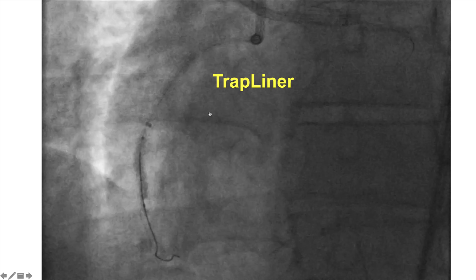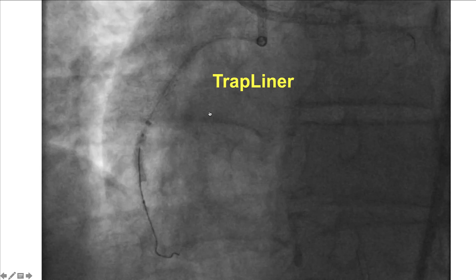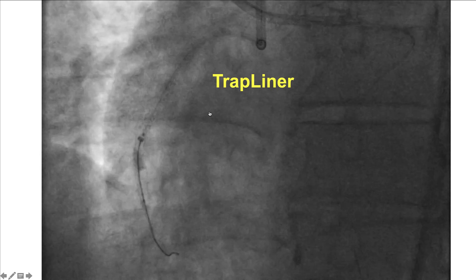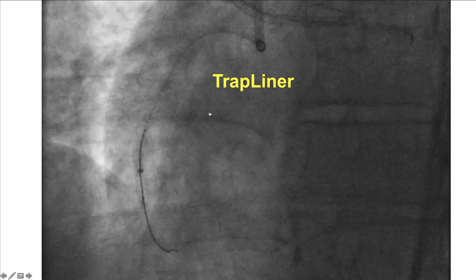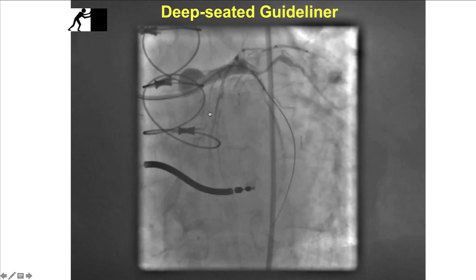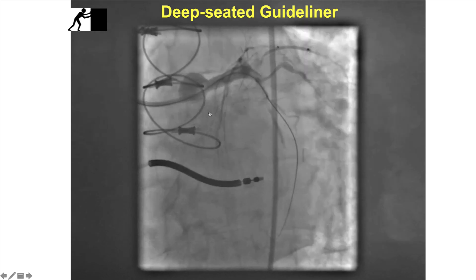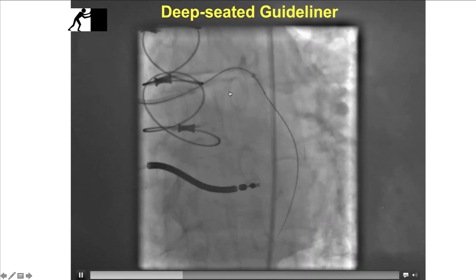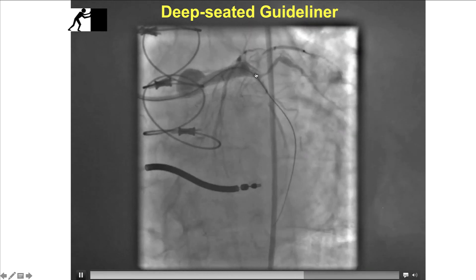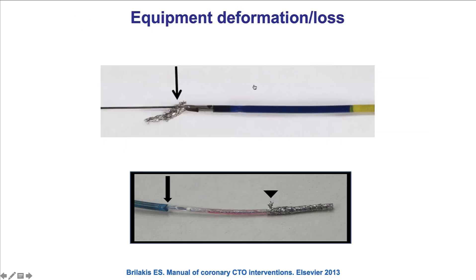Guide extensions are very powerful and can truly improve support, but they can also cause complications such as dissections. That is why injections should not happen if there is a dampened pressure waveform, and they can also lead to equipment deformation, which usually happens when trying to advance equipment through the proximal collar.